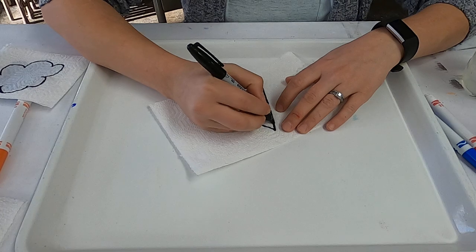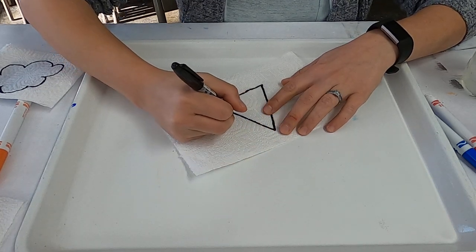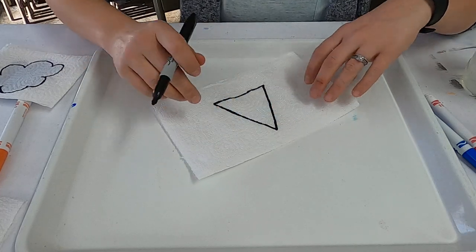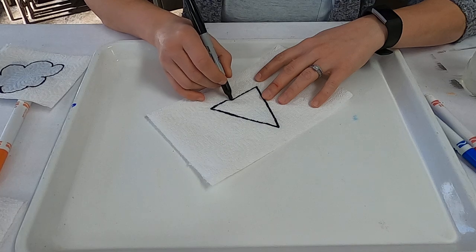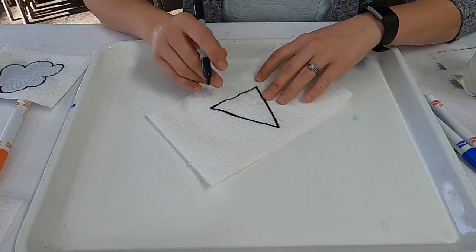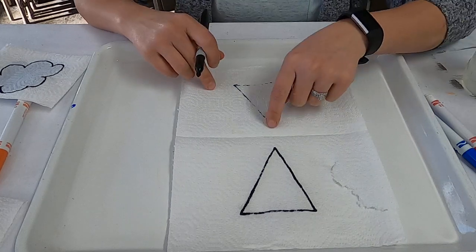So this is probably a time where you need to have a grown-up help. It's a little bit not difficult, but you don't want to go too hard on the paper towel and rip it. But we also want to make sure you go slow enough, and that it will bleed through. So you can see that I went over it a few times, so then it bled through.